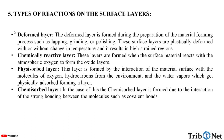What are the types of reactions on the surface layers? Deformed layer: the deformed layer is formed during the preparation of the material through forming processes such as lapping, grinding, or polishing. These surface layers are plastically deformed with or without change in temperature, resulting in high strain regions. Chemically reactive layers: these layers are formed when the surface material reacts with atmospheric oxygen to form oxide layers. Physisorbed layer: this layer is formed by the interaction of the material surface with molecules of oxygen, hydrocarbons from the environment, and water vapors, which get physically adsorbed forming a layer. Chemisorbed layer: this layer is formed due to the interaction involving strong bonding between molecules, such as covalent bonds.